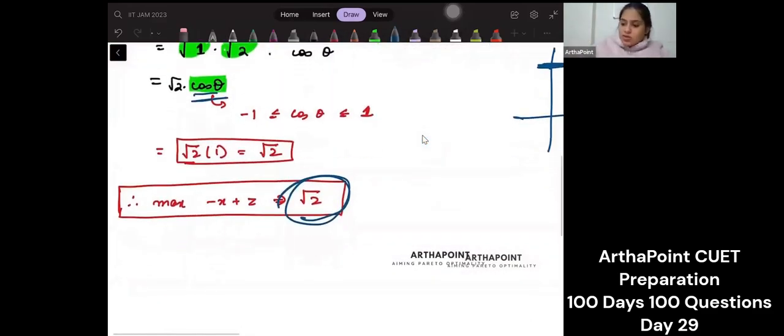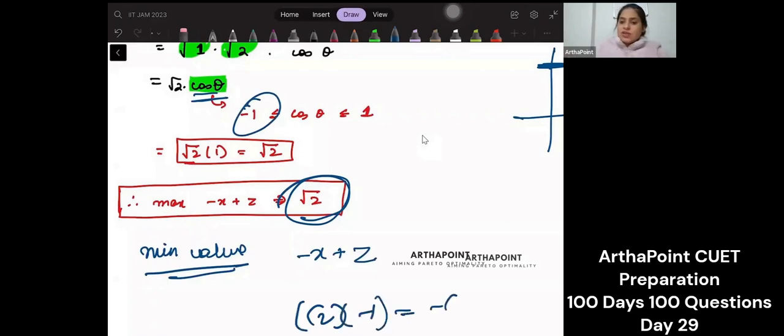Agar suppose they would have asked the minimum value of this function. Minimum value of minus x plus z. So what's the minimum value cos theta takes minus one? So I would have said root two into minus one. Minus root two. Simple.